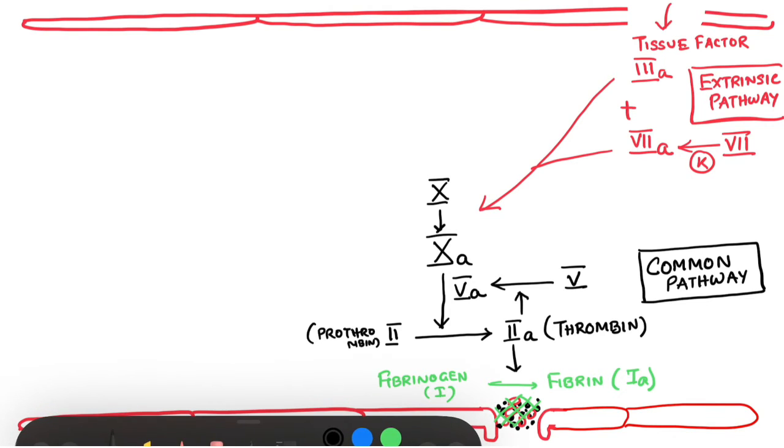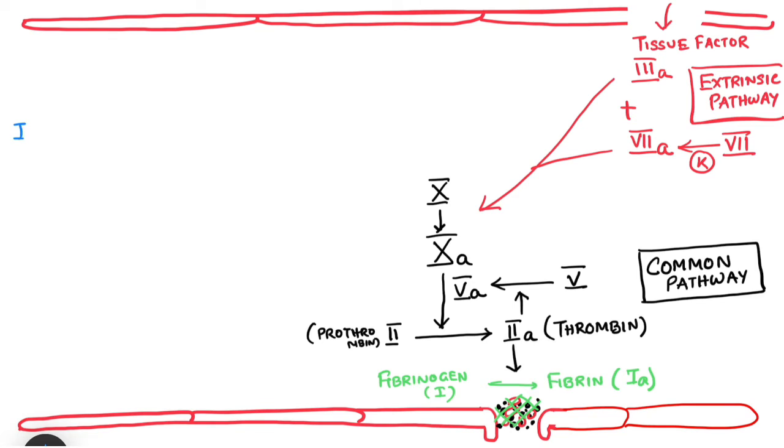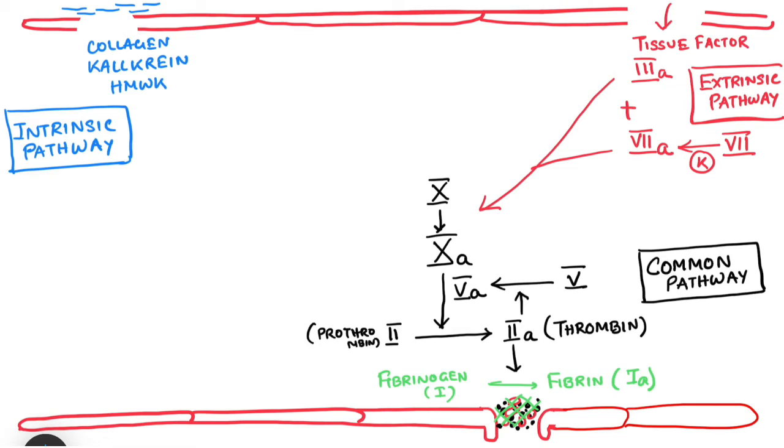Now, we will come to the discussion of something known as the intrinsic pathway. In case of intrinsic pathway also, there is damage to the blood vessel wall, but the damage is not for the entire depth. Rather, there is just only the endothelial damage. This endothelial damage exposes collagen, calycreme, and high molecular weight kininogen. All these together activate your factor 12.